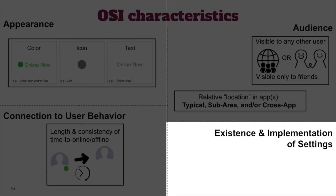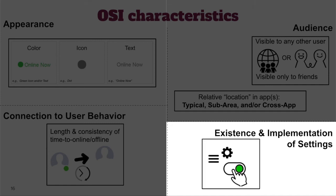Of the 20 apps that do provide settings, there are many questions a user might need to answer to understand how changing their setting will impact their self-presentation. For example, can I specify which individuals can or can't see my OSI? Only two of the apps allow you to specify specific individuals you might want to hide your OSI from. Also, if I change the setting, will people be able to tell? Even in apps where turning off OSIs causes users to appear offline, a user could easily give themselves away by doing things like liking or posting content in the app — and people would know they were actually online even though they appear offline.